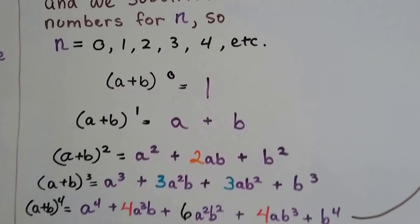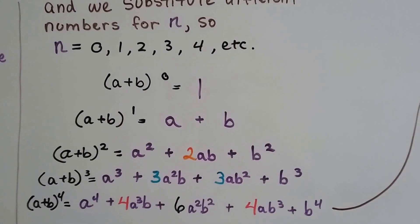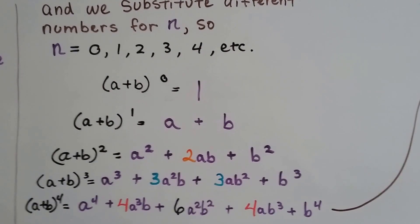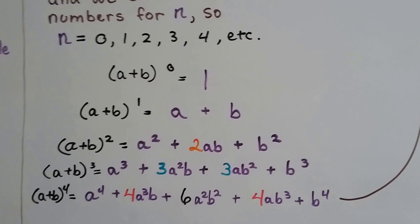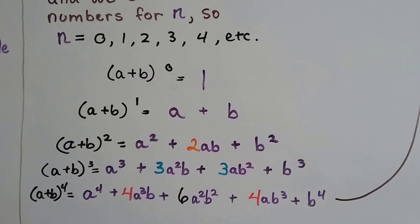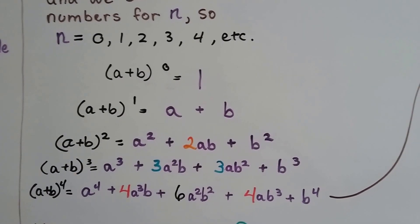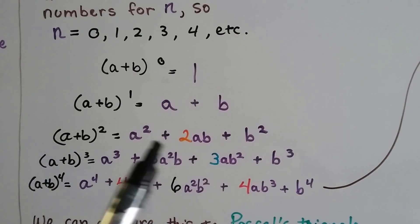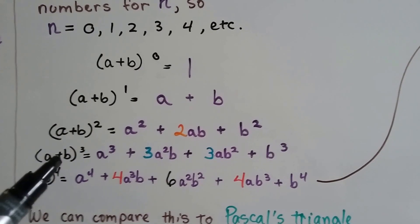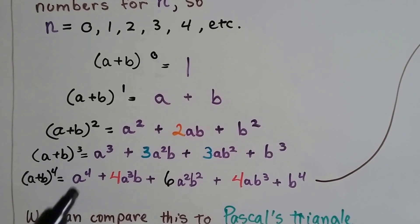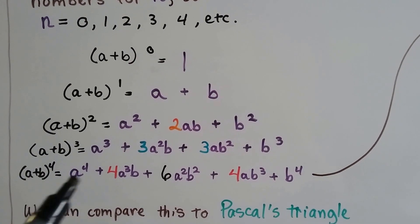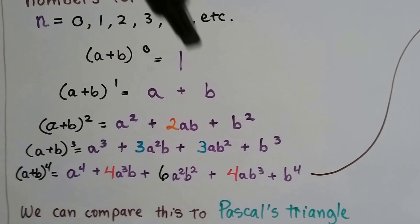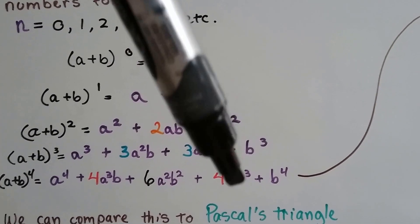We can actually make a triangle out of this. Look at this. If we have a plus b to the 0 power, we know the 0 power means it's going to equal 1. So we've got a 1 right here on the top of our triangle. And a plus b to the first power just means a plus b. a plus b to the second expands like this, and a plus b to the third expands like this, and a plus b to the fourth expands like this. And look at these numbers — look at how it goes 2, 3, 4, 2, 3, 4.